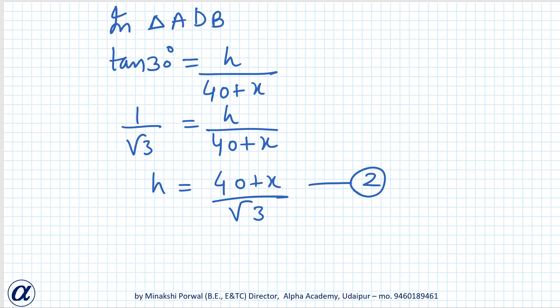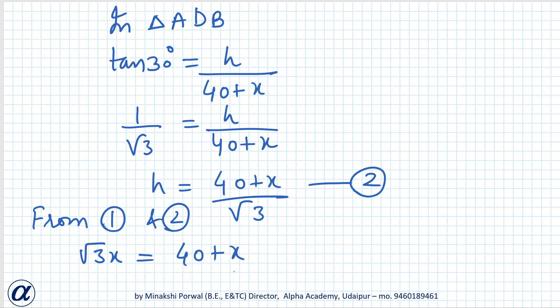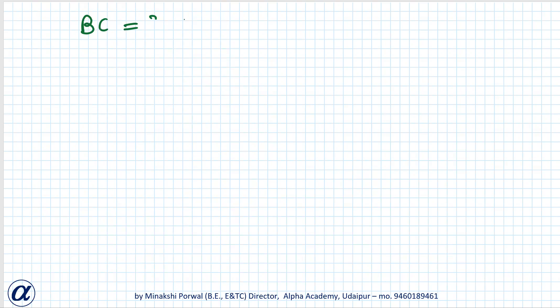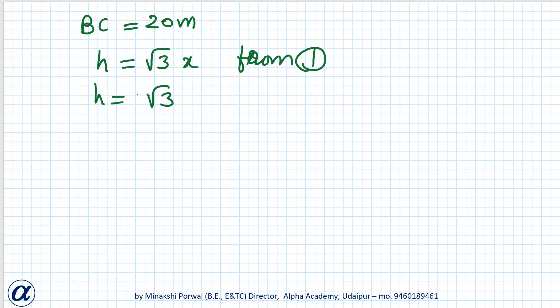In triangle ADB, tan 30 degrees equals perpendicular upon base. tan 30 is 1 by root 3, so 1 by root 3 equals h upon (40 plus x), or h equals (40 plus x) by root 3. This is equation two. From equations 1 and 2: root 3 x equals (40 plus x) by root 3, so 3x equals 40 plus x, giving 2x equals 40, therefore x equals 20. So BC equals 20, and h equals root 3 into 20 — that is the height of the tower.